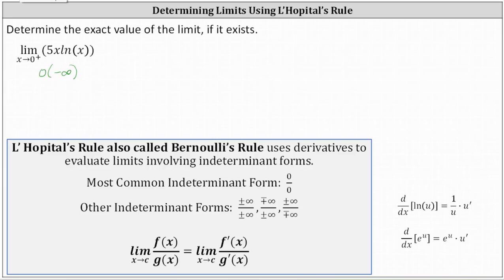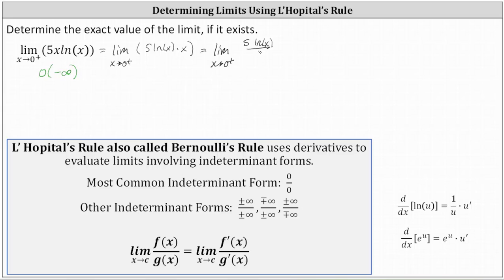To do this, let's write the function 5x natural log x as 5 natural log x times x. Our goal is to have the function as a quotient, which we can do because multiplying by x is equivalent to dividing by 1 over x. This gives us the limit as x approaches zero from the right of 5 natural log x divided by 1 over x.